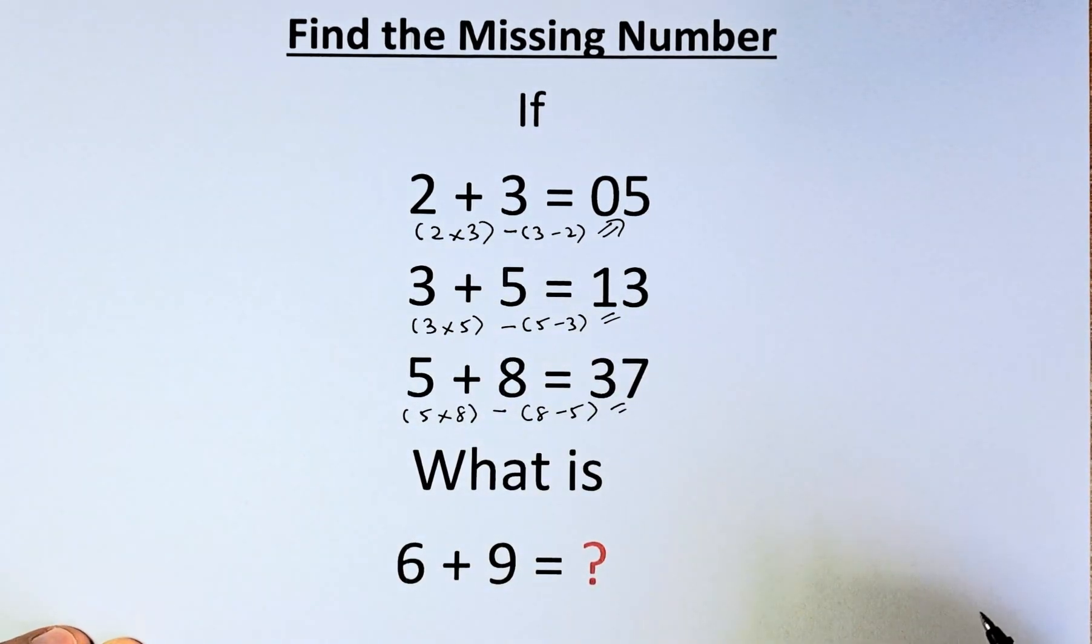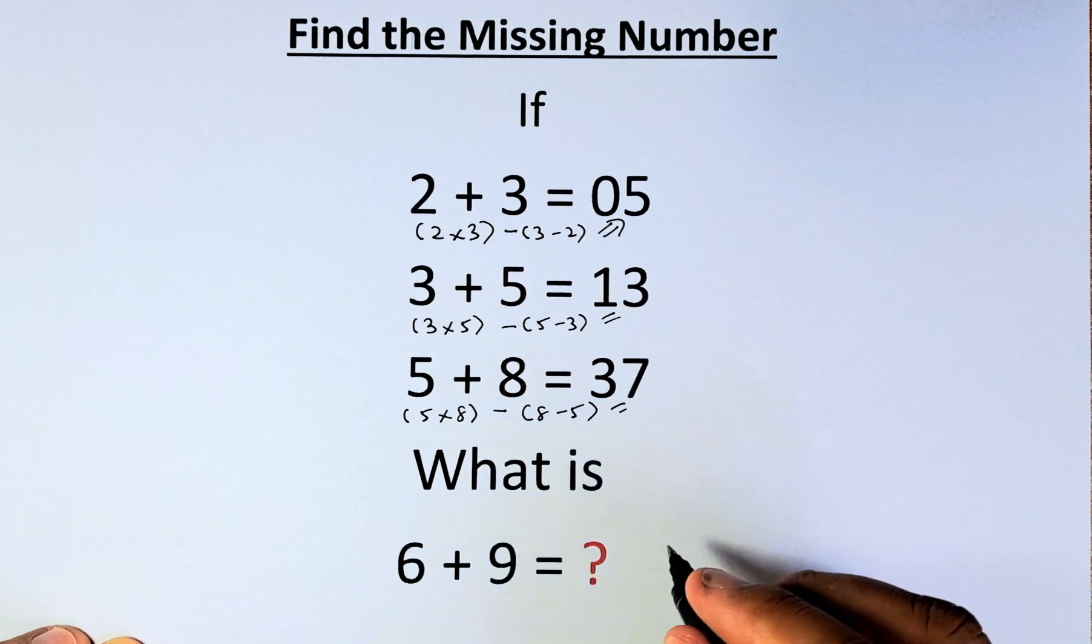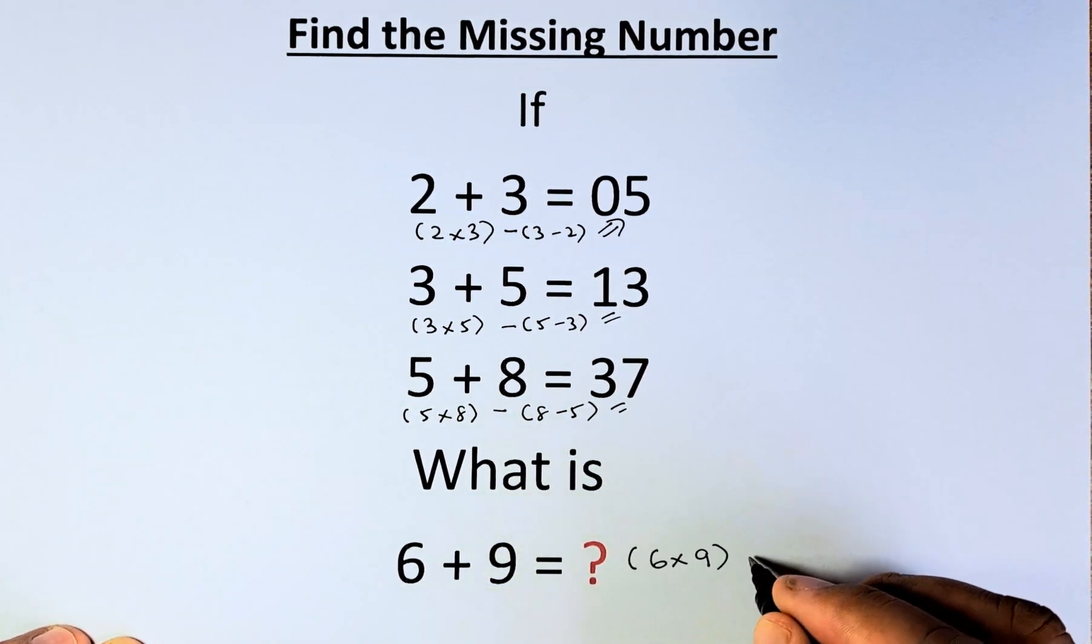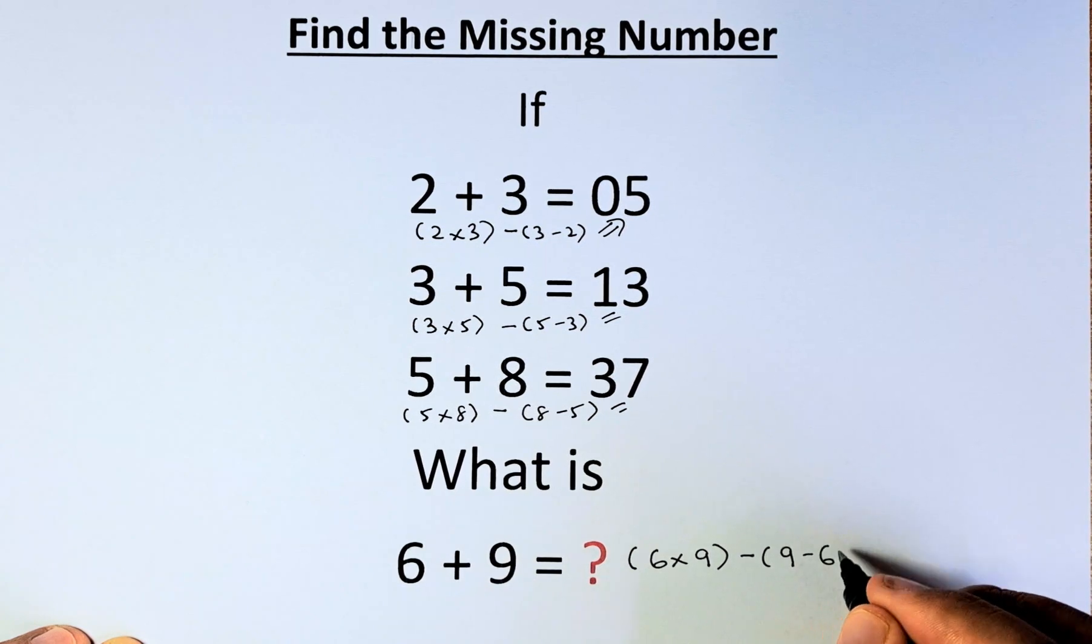So in our case of 6 plus 9, what we're going to do is take 6 multiplied by 9 minus 9 minus 6.